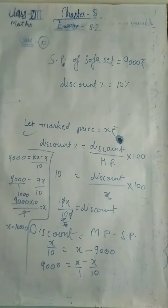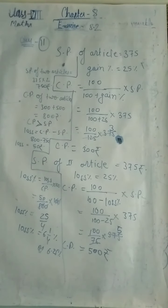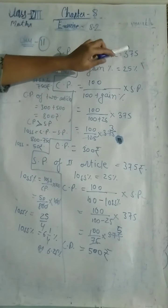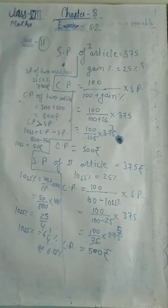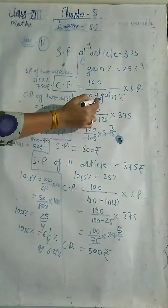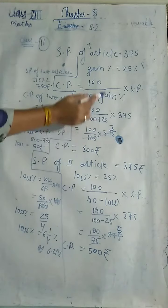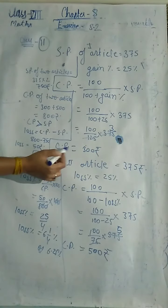Question number eleven: Ramesh sold 2 articles at Rs. 375 each. On one he gains 25% and on the other he loses 25%. Find overall gain or loss percentage. For the first article: SP = Rs. 375, gain = 25%, so CP = 100/(100+25) × 375 = 100/125 × 375 = Rs. 300.